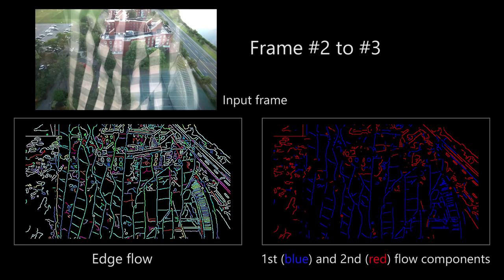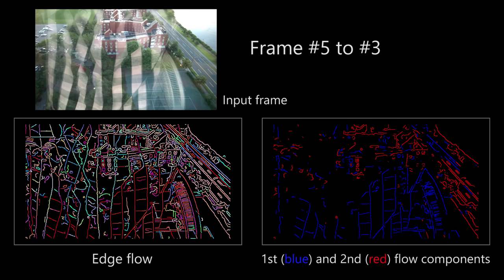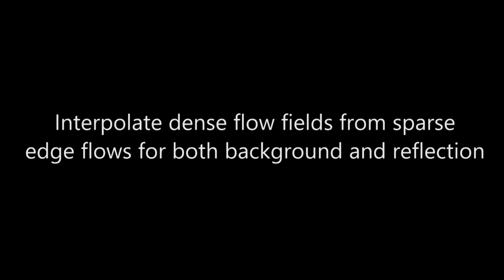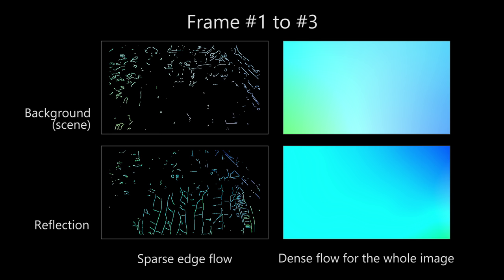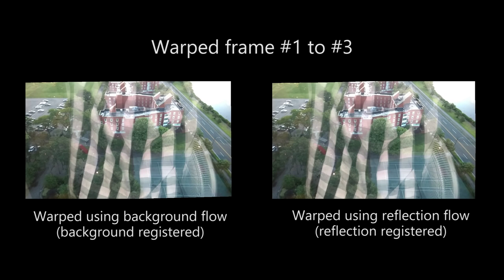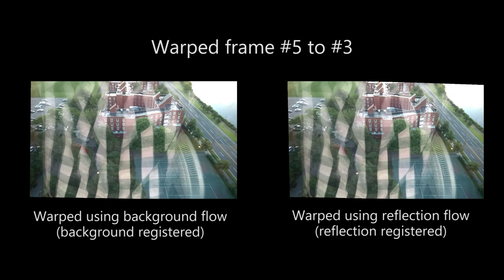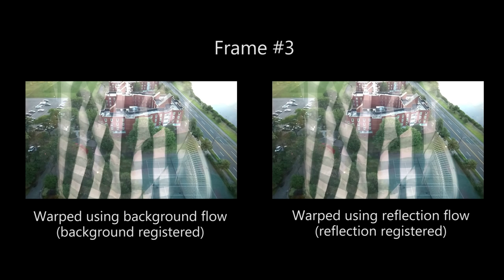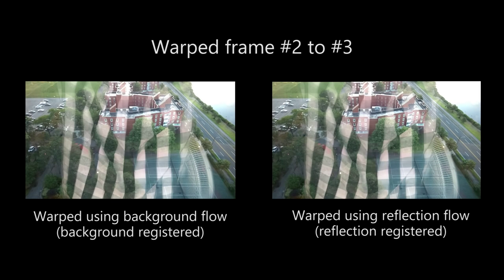Using RANSAC, we then discover the first and second major components of the edge flows. These flow components correspond to the motion of the background and reflection respectively. We then interpolate dense flow fields from sparse edge flows for both the background and reflection motion. Here we show the interpolated dense flow fields for each frame. Warping each of the images to the reference image using the initialized dense flow fields produces two images per frame, corresponding to the background and reflected flow. This results in a series of images where the background component is nearly static and another series where the reflected component is nearly static.